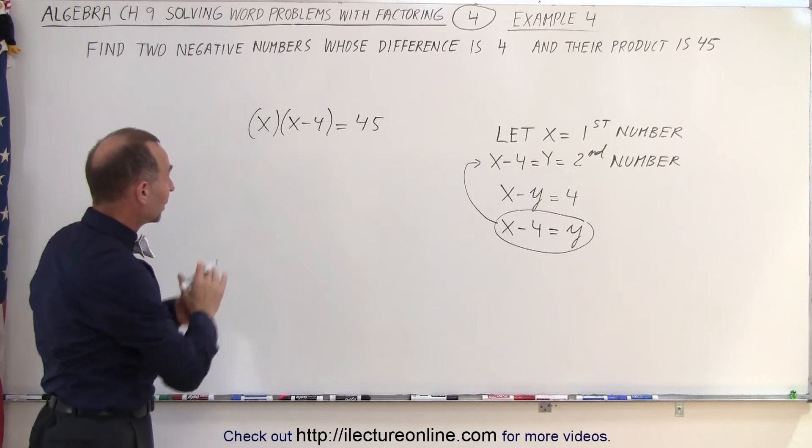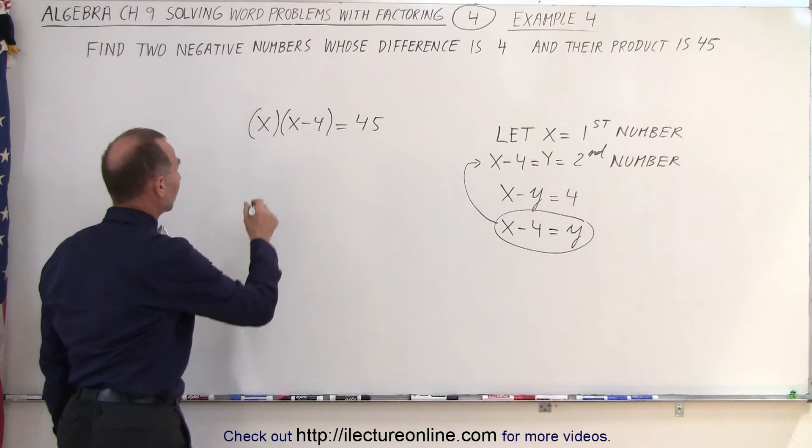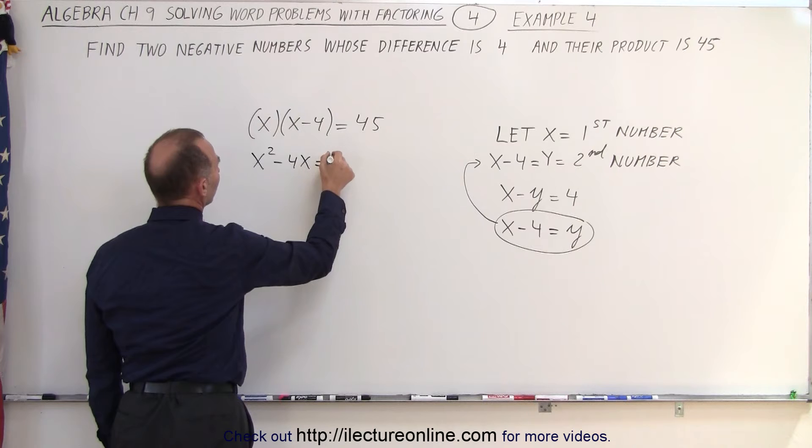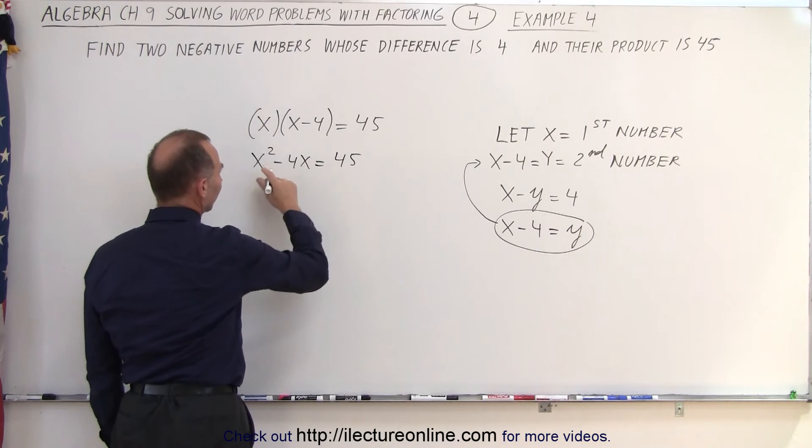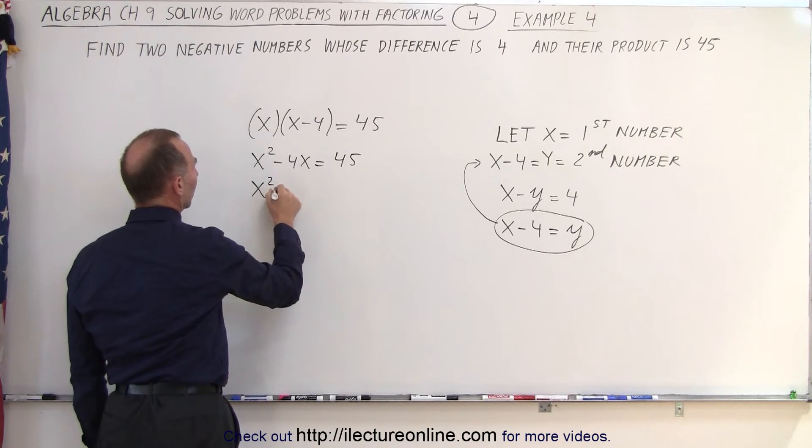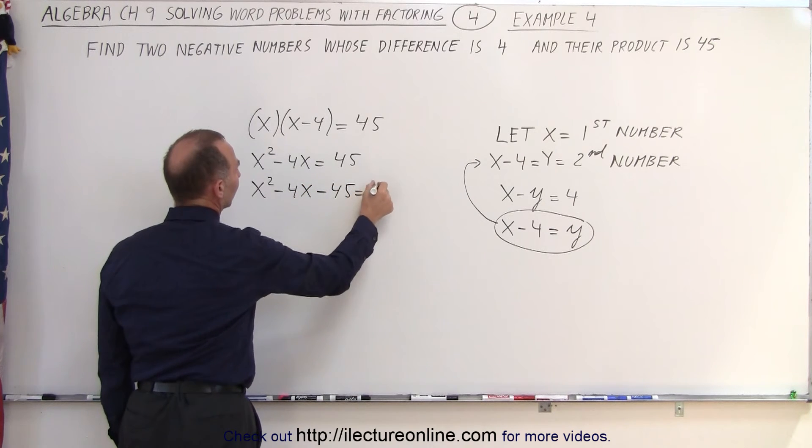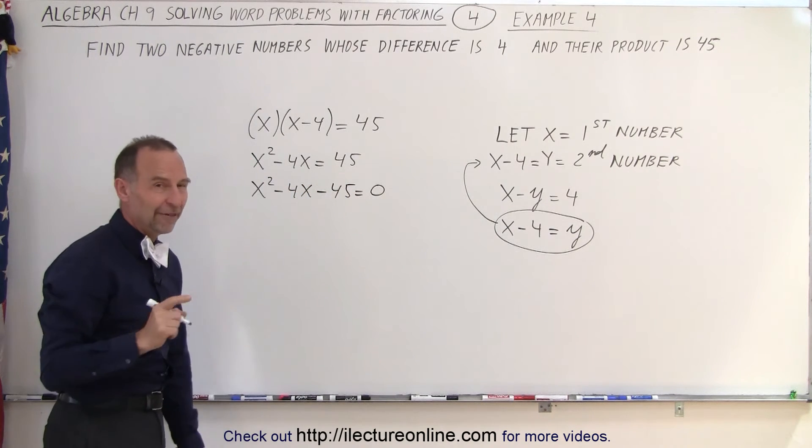Let's go ahead and work that out. This will be a quadratic equation. So this becomes x squared minus 4x equals 45. Bring the 45 across. I can write that x squared minus 4x minus 45 is equal to 0. And now let's go ahead and factor that.